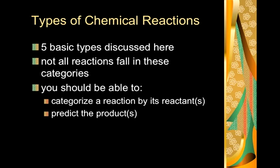So what you should be able to do by the time you're done with this is categorize a reaction into one of these five types. Categorize a reaction by its reactants alone and then start to be able to predict the products. You might not be real good about this part yet, but you should definitely be able to just look at a reaction's reactants and be able to tell me what kind of reaction it is.